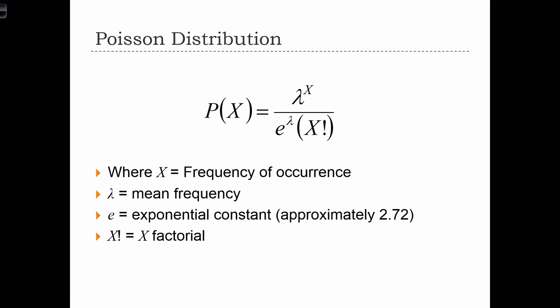In this case, we can use the Poisson distribution. The probability of there being x occurrences of an event is equal to lambda to the power of x divided by e to the lambda times x factorial. Lambda is just the notation that we're going to use for the mean frequency, and that is going to be given to you in the problem statement.